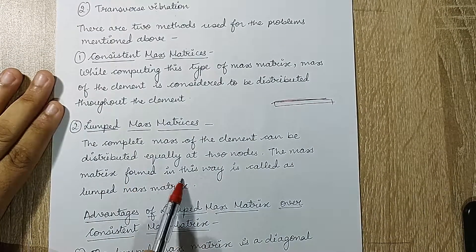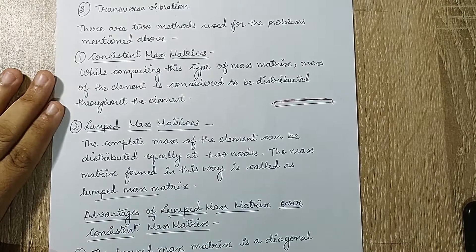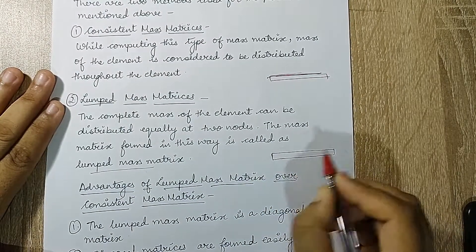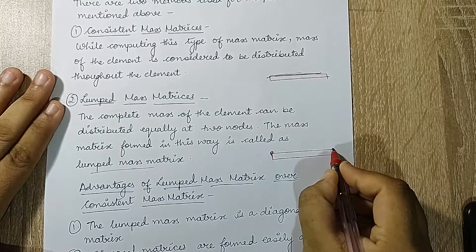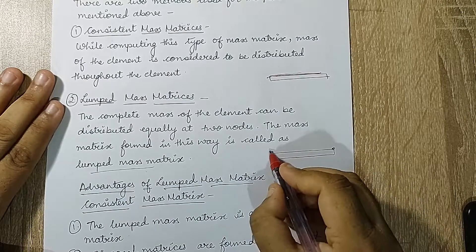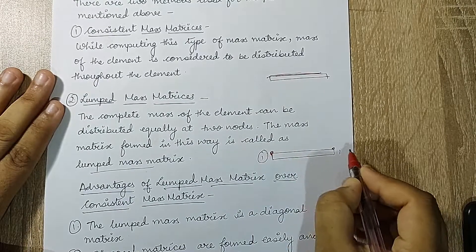The mass matrix formed in this way is called lumped mass matrix. If you look at the same beam, you can say that the mass is considered at these two nodes for the beam. This is node one, this is node two.